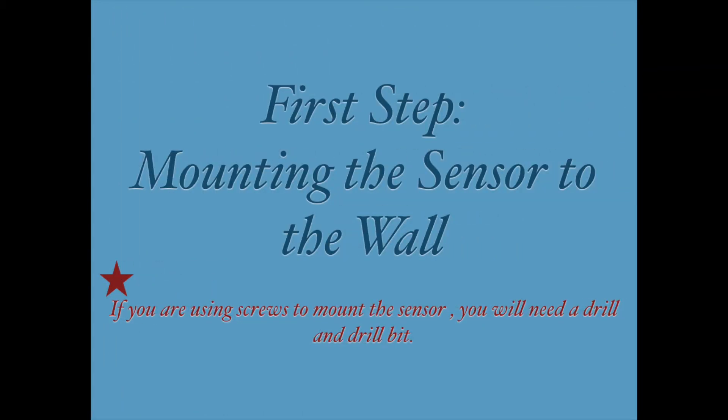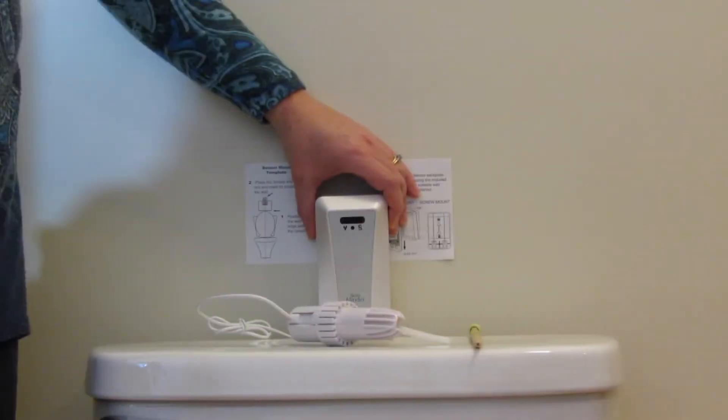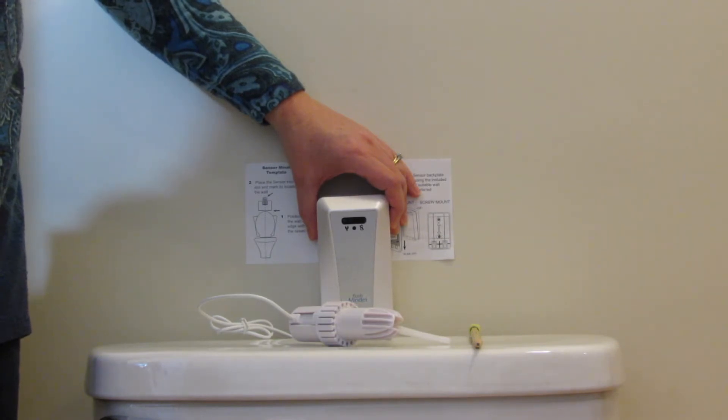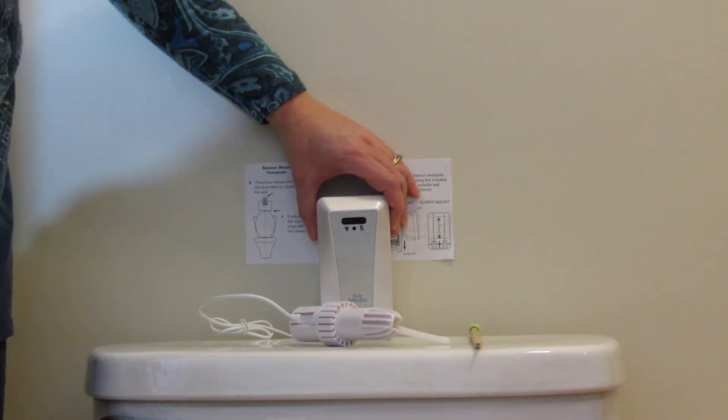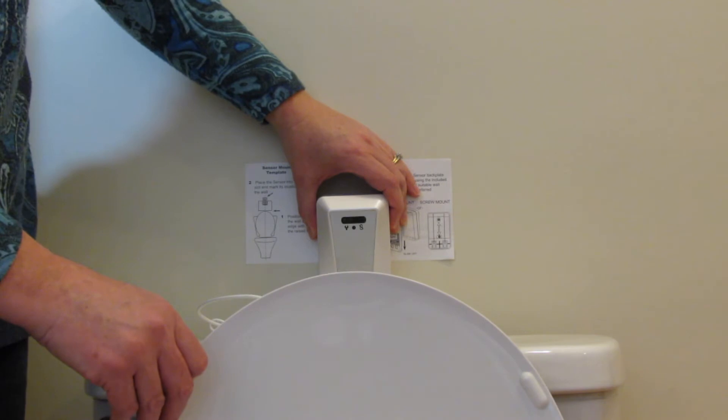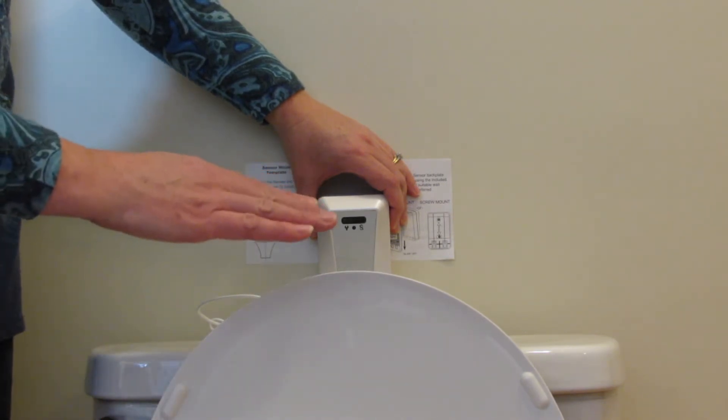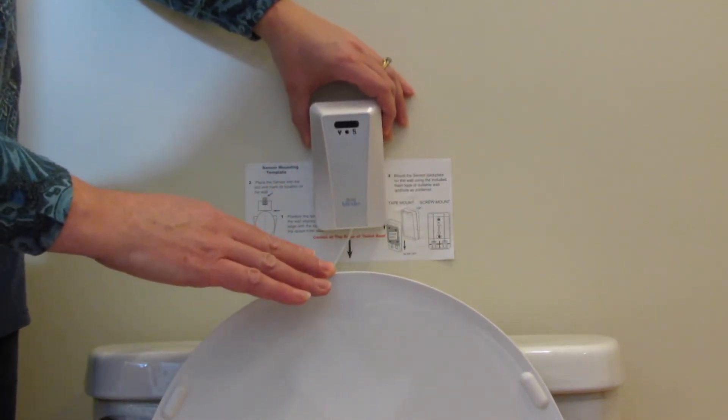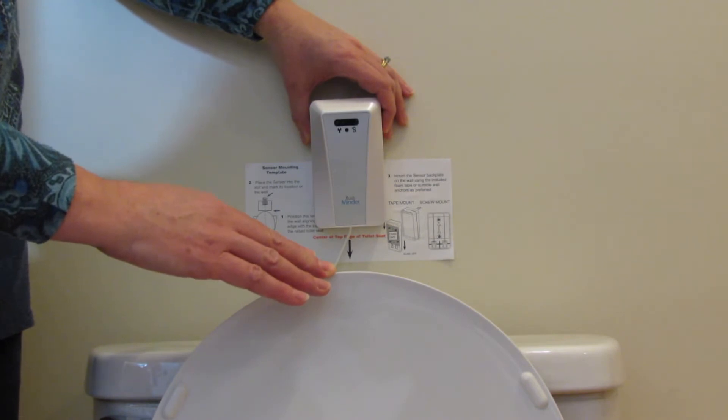The first step in the installation process is to mount the sensor on the wall behind the tank. You will need a drill and drill bit if you are using screws. Raise the lid of the toilet and position the sensor high enough to see without obstruction, yet low enough to detect a person sitting.